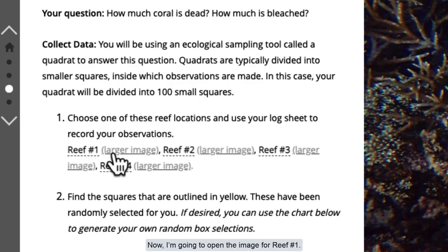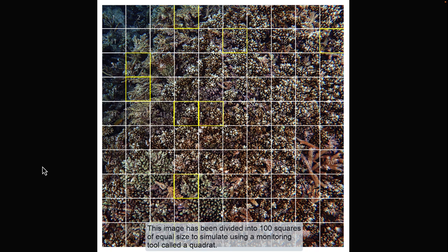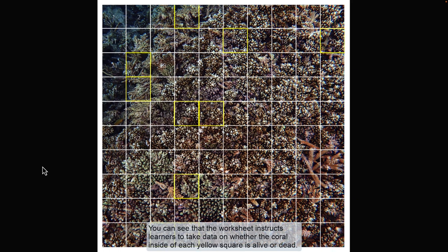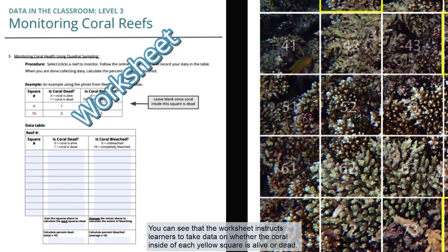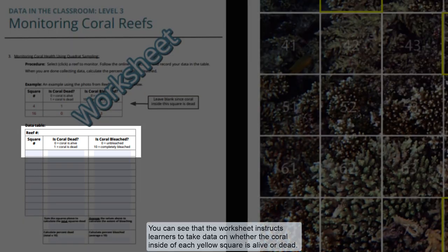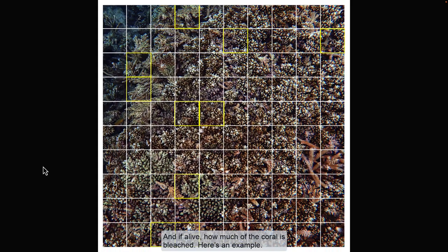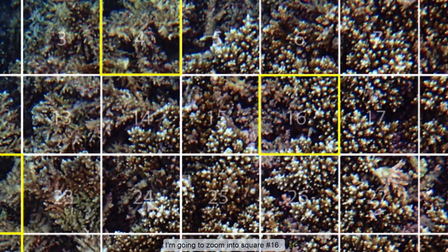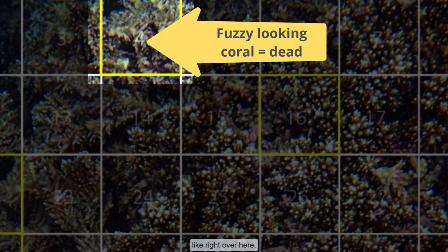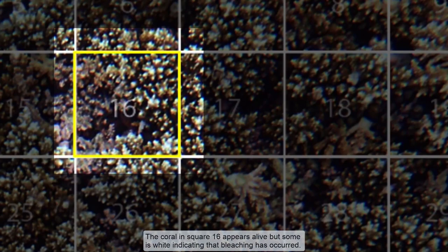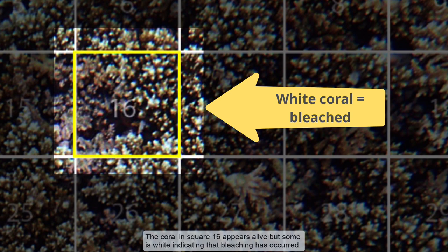Now, I'm going to open the image for reef number 1. This image has been divided into 100 squares of equal size to simulate using a monitoring tool called a quadrat. Ten of these squares represent a subsample and are outlined in yellow. The worksheet instructs learners to take data on whether the coral inside of each yellow square is alive or dead, and if alive, how much of the coral is bleached. Here's an example — I'm going to zoom in to square number 16. Dead coral typically appears fuzzy because of algae that grows over it when it's dead. The coral in square 16 appears alive, but some is white, indicating that bleaching has occurred.